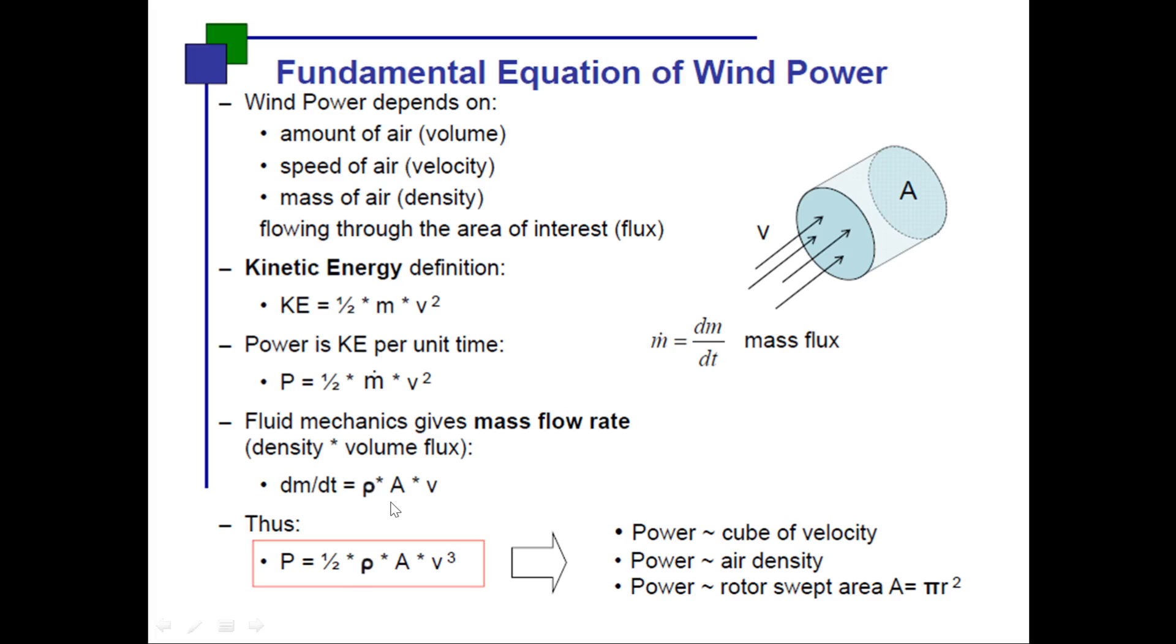Therefore the power, which is kinetic energy per unit mass, is given as half rho Av cubed. Mass flow rate m dot is substituted with rho Av, so you will get power equals half rho Av cubed. So power is proportional to cube of velocity, directly proportional to air density, and directly proportional to swept area.